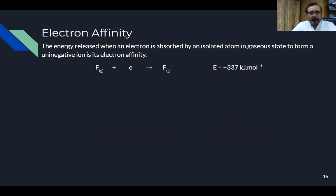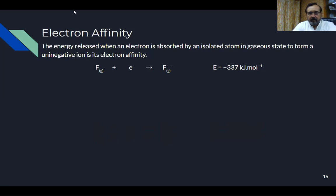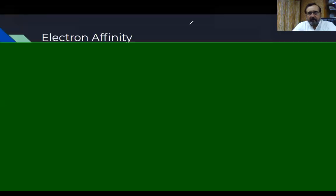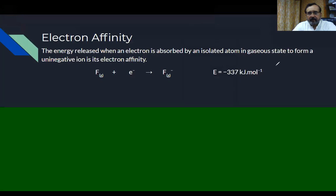For example, fluorine absorbs an electron to form fluoride, and the energy released here is negative 337 kJ. This value represents the electron affinity of fluorine.